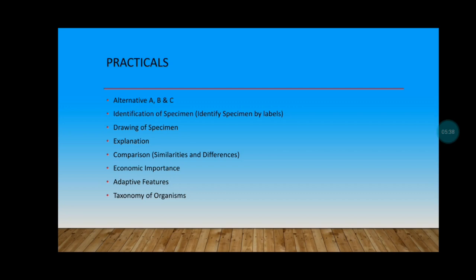And then taxonomy, the binomial nomenclature, the genus species. The genus is supposed to start with a capital letter, underlined, and the species is supposed to start with a small letter, underlined as well.